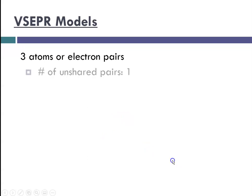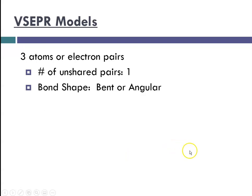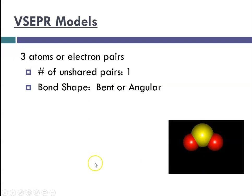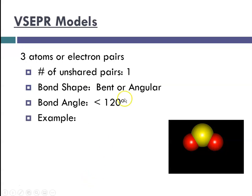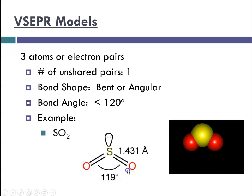If you have three atoms or electron pairs with one unshared pair, you get a slightly different result — the resulting shape is bent or angular. The bond angle is less than 120 degrees, which is the result of this unshared pair repelling things away. An example would be sulfur dioxide, which has a bond angle of 119 degrees. The unshared pair is forcing the molecule into a bent configuration instead of linear.